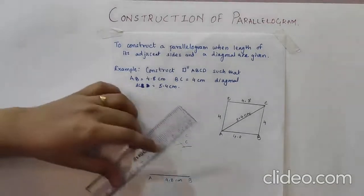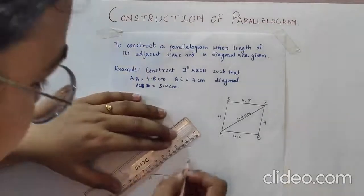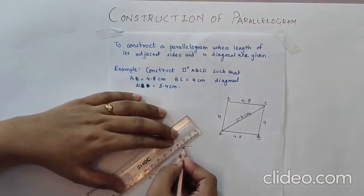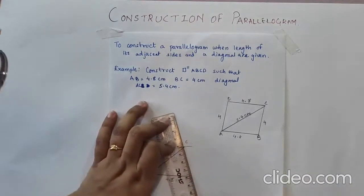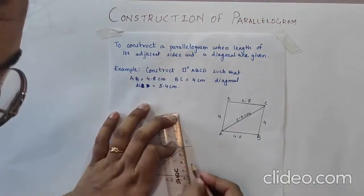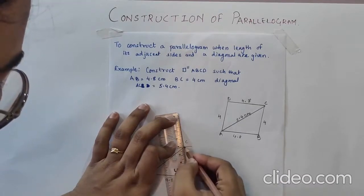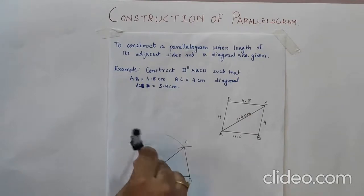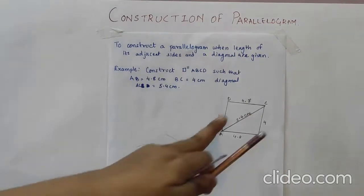Now we have to join AC and BC. Now the other half triangle we have to draw. We have already taken the measurement 4 cm. So by keeping the center as A and the radius 4 cm, we will cut the arc over here.